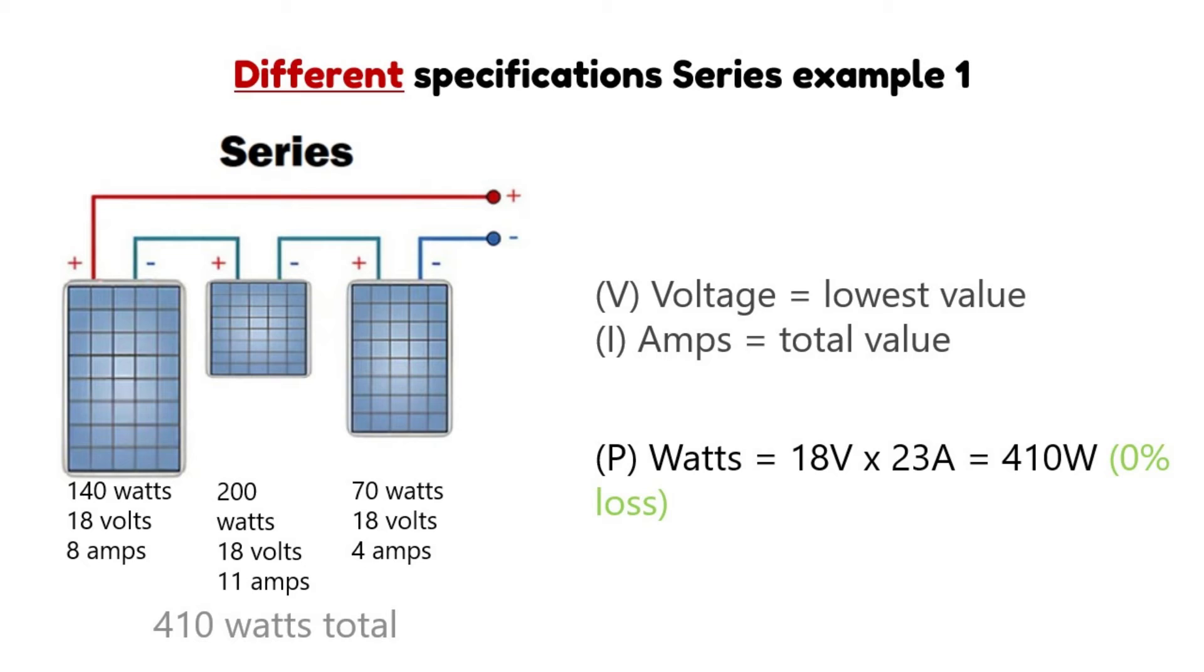The combined watts output of this system is 410 watts, and as you can see they're all at 18 volts. So if we connect them in series, the voltage will be the total value and they're all 18 volts, so it would be 54 volts, and the amps will add up. In this case it will be 54 volts times 23 amps and that is 1,242 watts... wait, let me recalculate. 18 volts times 23 amps is 414 watts, which means a 0% loss.